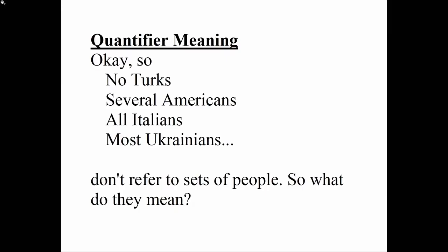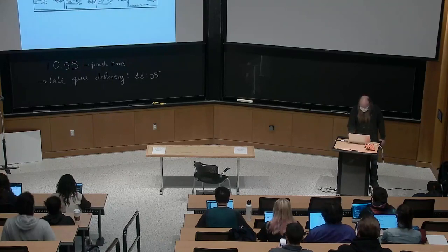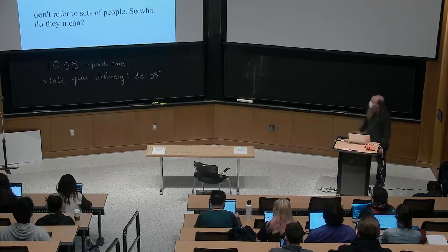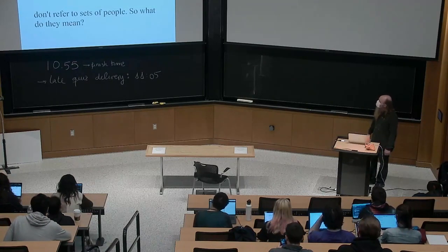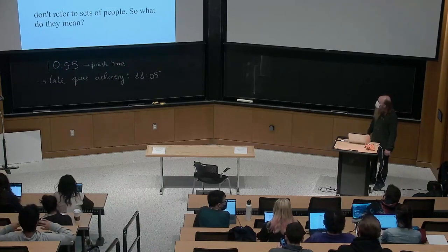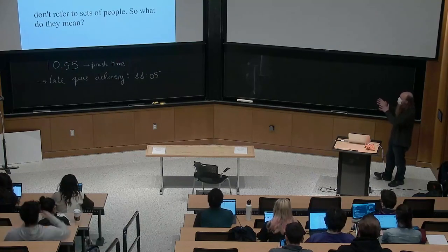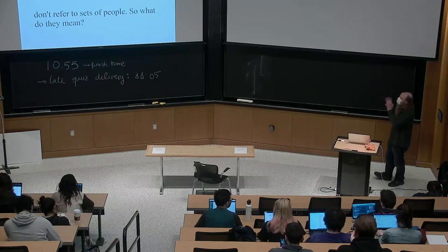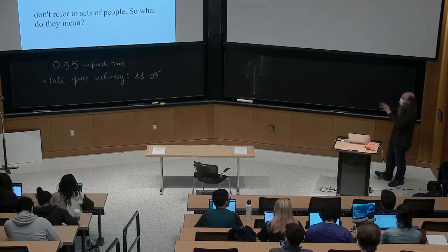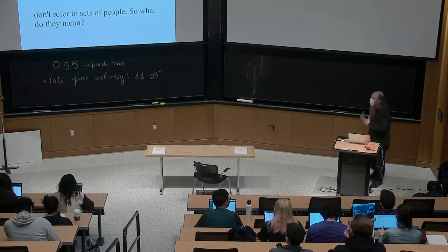Expressions like 'no Turks' or 'several Americans' or 'all Italians' or 'most Ukrainians' don't refer to sets of people. What they do is: words like 'no,' 'several,' 'all,' or 'most' do set-theoretic things with the set they are combining with — the set of Turks, Americans, Italians, or Ukrainians — causing that set to interact in interesting ways with a set determined by the rest of the sentence. In order to talk about this, let me do a quick review of set theory.